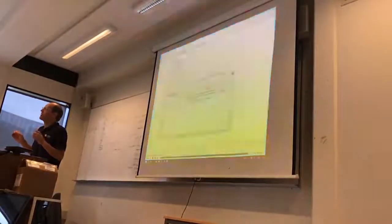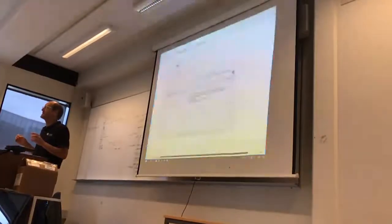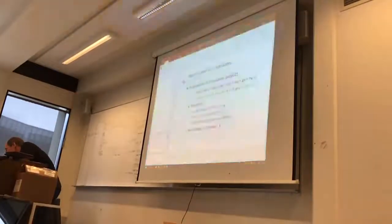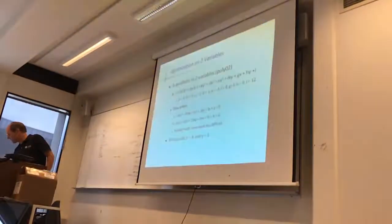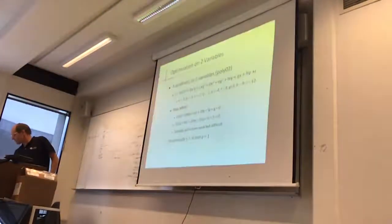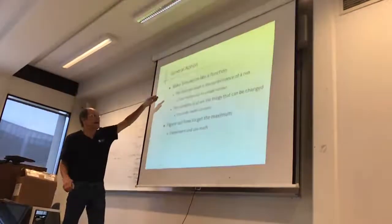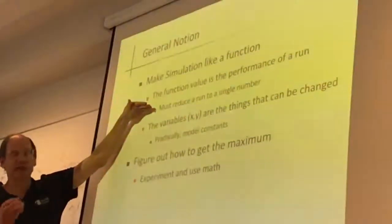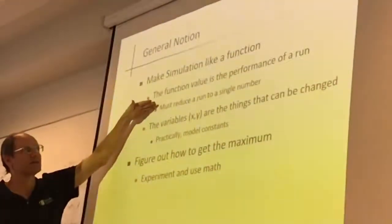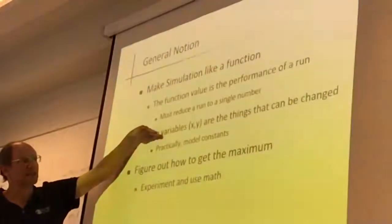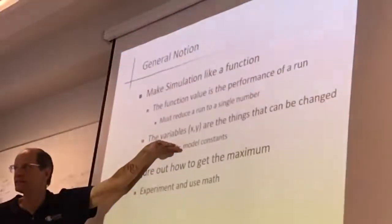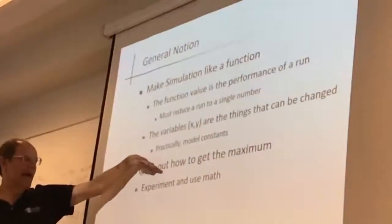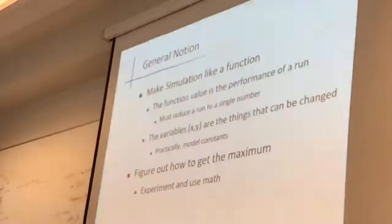So this is either really interesting or really boring. Let's go back to where we were. That's optimization on two variables. This was just really a way to go through the mechanics of doing the optimization and set up some of the conceptual things behind it. So what are we doing when we optimize a model? We're making a simulation look like it's just like a function. The function value is the performance of a run — every time we run a model, we've got a number that says this is how the model does. We're effectively reducing a run to a single number.